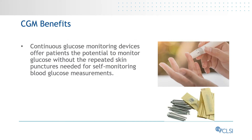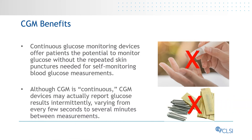CGM devices offer patients the potential to monitor glucose without the repeated skin punctures that are needed for self-monitoring blood glucose measurements using traditional handheld glucose meters that use test strips and lancets for obtaining blood drops. Although CGM is continuous, CGM devices may actually report interstitial fluid glucose results intermittently, measuring from every few seconds to several minutes between measurements.